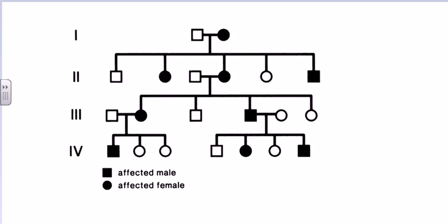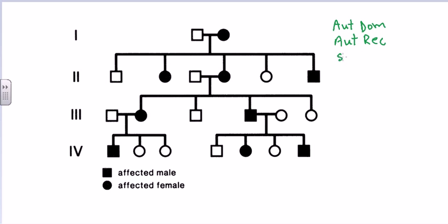Welcome back. In this video tutorial I'll be talking about solving pedigree problems. This is a pedigree chart showing four different generations. The dark shaded part represents an infected individual and the blank one is an uninfected individual. There can be four different inheritance patterns: autosomal dominant, autosomal recessive, sex-linked dominant, and sex-linked recessive.